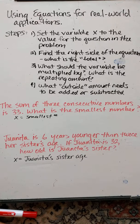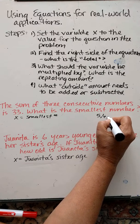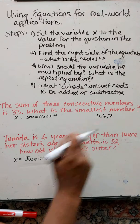All right, let's take the first one here. The sum of three consecutive numbers is 33. What is the smallest number? The word consecutive means one after the other. So here what they're saying is three consecutive numbers. I'm going to just, for an example, say, let's say 5, 6, and 7. These are three consecutive numbers.